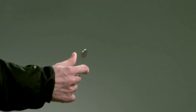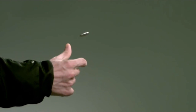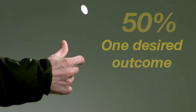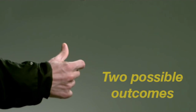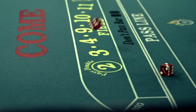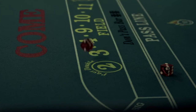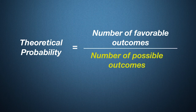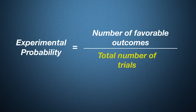The theoretical probability of flipping a two-sided coin and it landing on heads is 50% — there is only one desired outcome but two possible outcomes. The theoretical probability of rolling a six-sided die and it landing on just one number is 1 out of 6, or roughly 17%. In theoretical probability, you divide by the number of outcomes. In experimental probability, you divide by the number of trials.